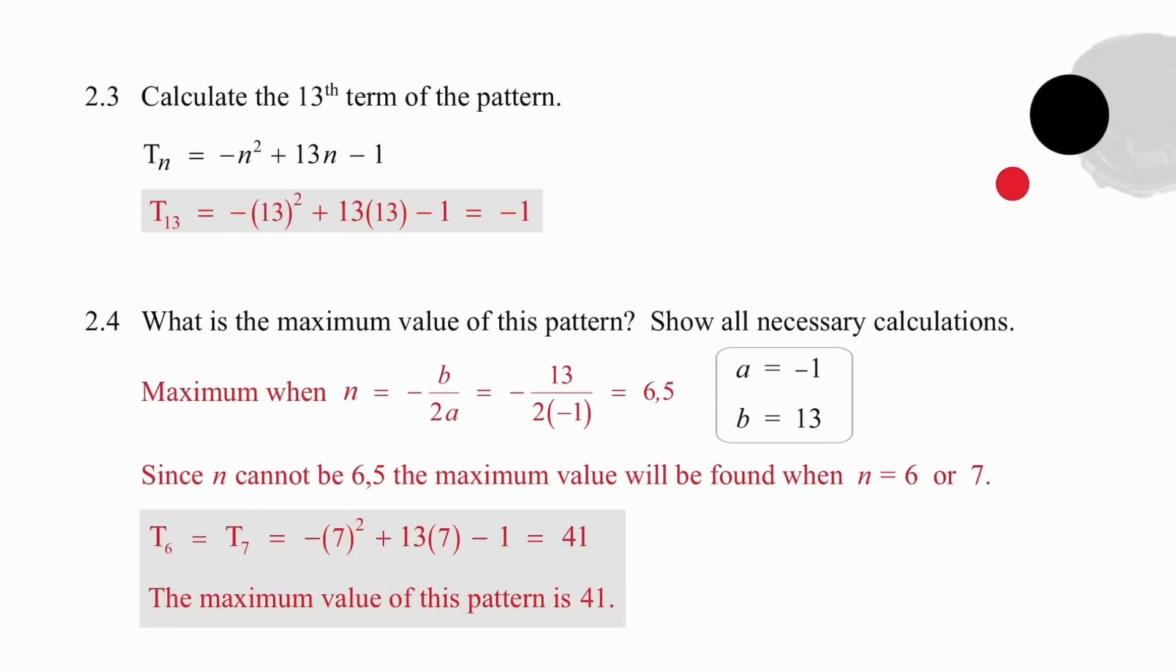In 2.3, we are going to use that formula to work out the value of the 13th term. So if we substitute 13 in place of n, we will end up with a result of minus 1. So the 13th term has a value of minus 1.